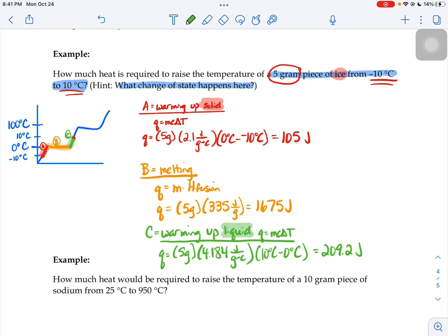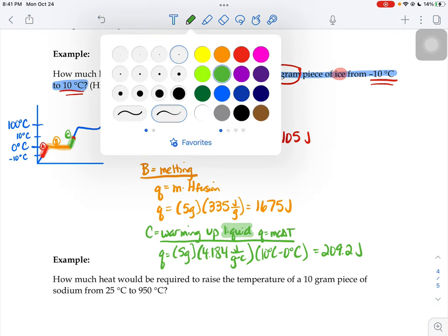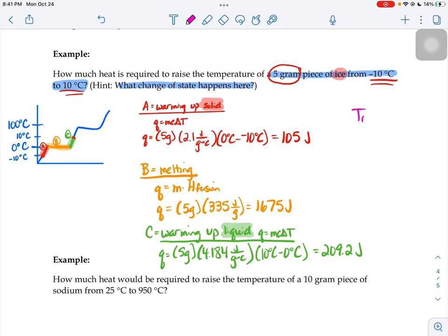If I wanted to know the total heat to do all of it, to do all three steps, I would have to add together A, B, and C. So I'd add together 105, 1675, and 209.2. If you do that, you'll get the number 1,989.2 joules.